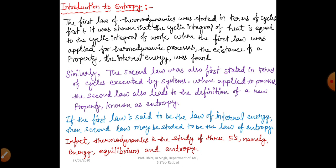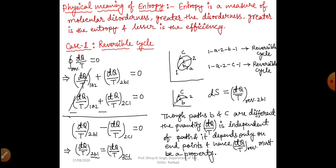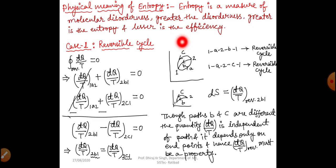These three E's — energy, equilibrium, and entropy — are very important topics in thermodynamics. Now we will try to understand the physical meaning of entropy. Entropy is a measure of molecular disorderness. Greater the entropy, lesser the efficiency of the system. Entropy is nothing but the measure of how disorderly molecules are moving in a system, and this calculation of disorderness of molecules is under the study of entropy.